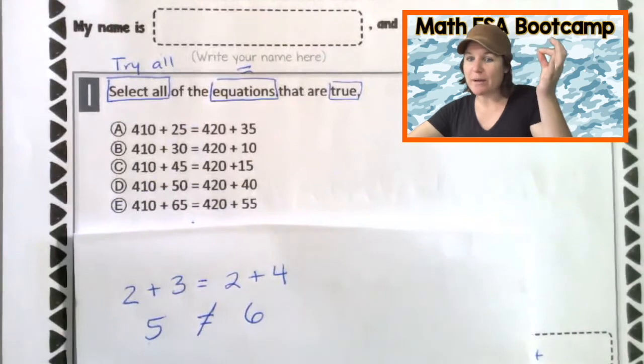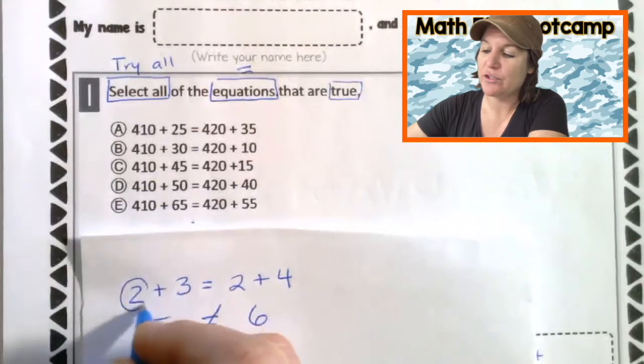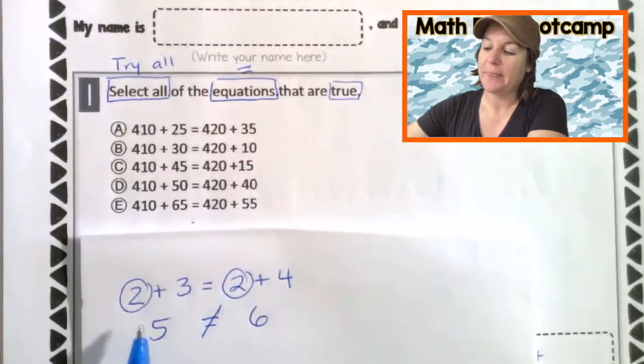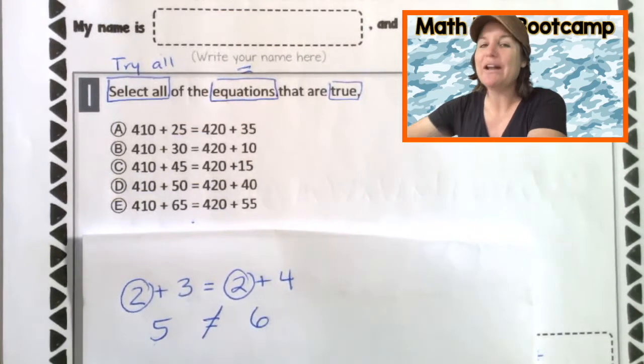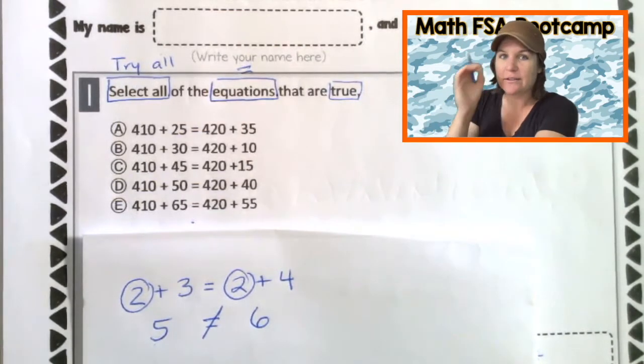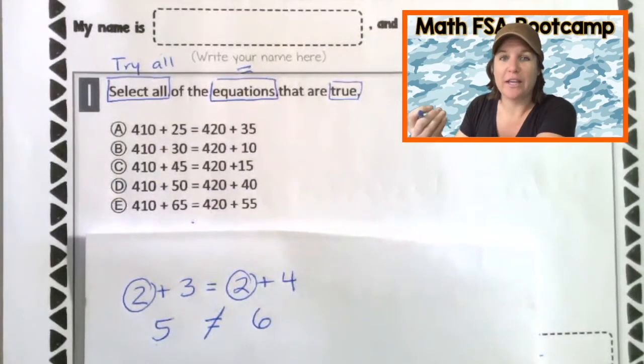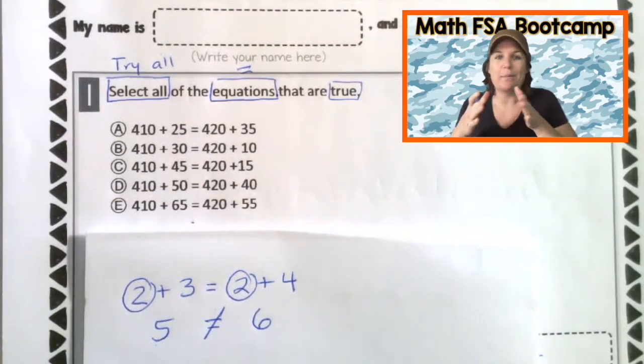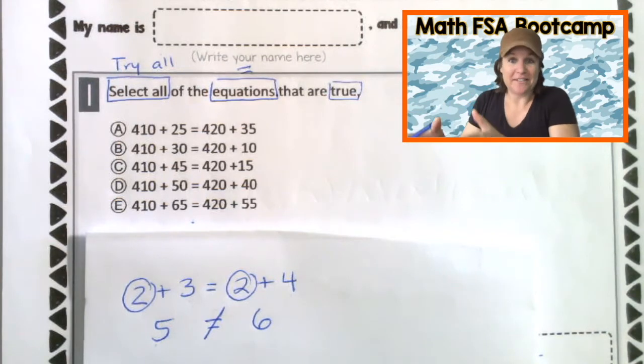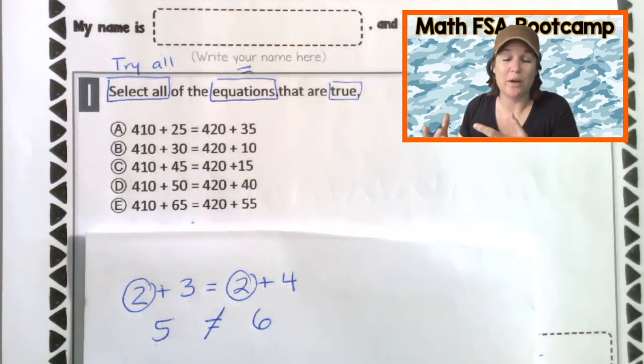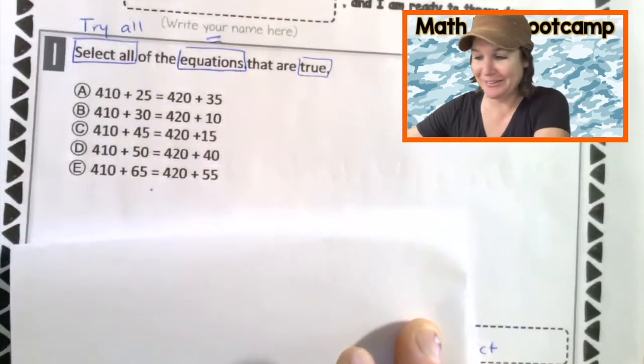And the way that you could think about this without even adding it up would be that here we both have twos. On one side, we're adding three. And on this side, we're adding one more four. So right away, without even adding it, we can determine that this is not going to be a true equation. And that is how they want you thinking about this standard. So I'm going to show you the way to think about it without really adding and also saying, let's be real. And this is a test. And how can we figure out which way that they will be true? All right, stick with me.